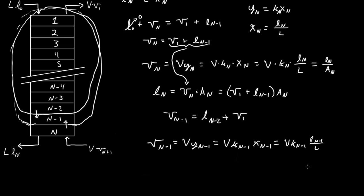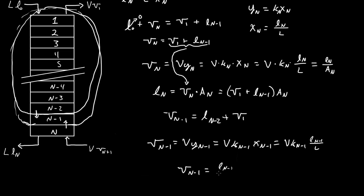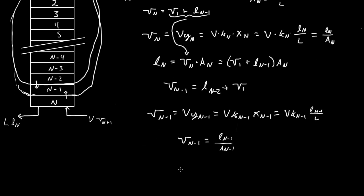Now we have that, and we can plug in what we did before. Rearranging, Vn minus 1 equals Ln minus 1 all over An minus 1. And then doing the same rearrangement: Ln minus 1 equals Vn minus 1 times An minus 1.